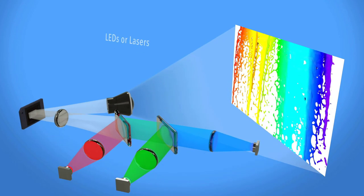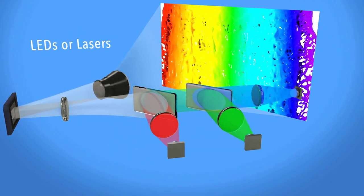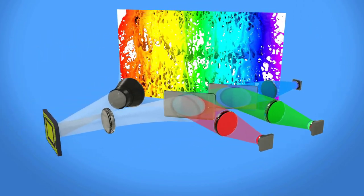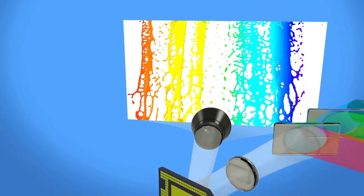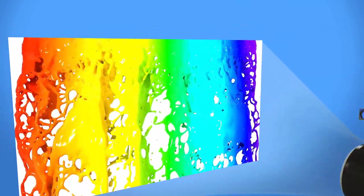In other systems, colored LEDs or lasers can be used to display video without a color wheel. Because the mirrors can switch so fast, a projection system based on DLP technology can display over one billion colors.